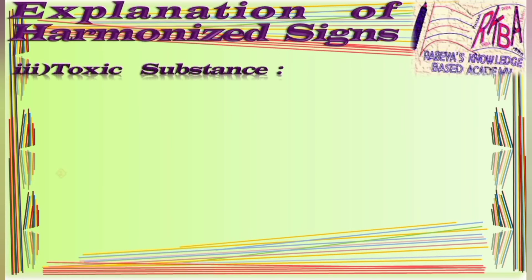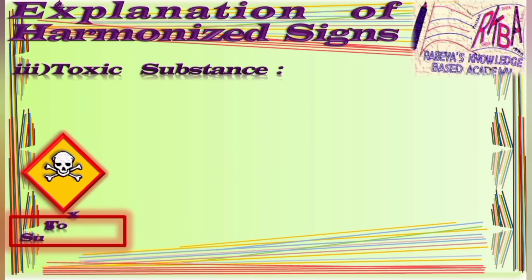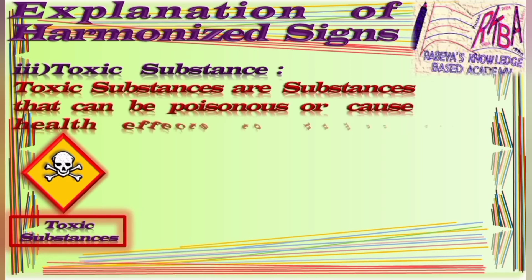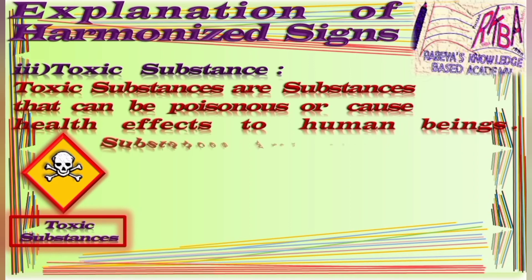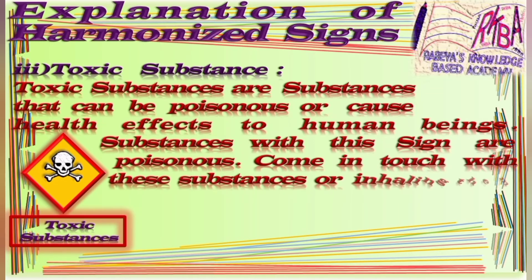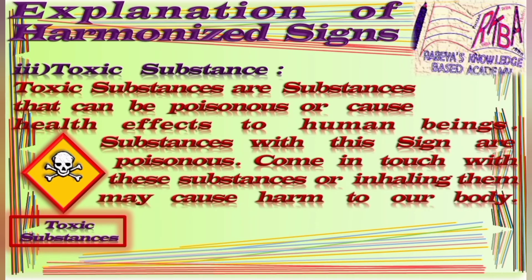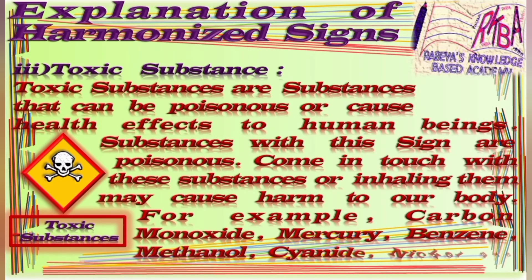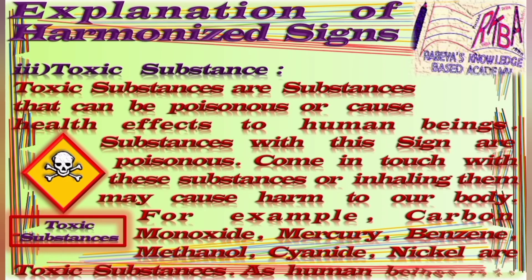The third one is toxic substances. In this slide, a sign of toxic substances has been added, which is a figure of a human being skeleton — specifically the skull. Toxic substances are substances that can be poisonous or cause health effects to human beings. Substances with these signs are poisonous; coming in contact with them or inhaling them may cause harm to our body. For example, carbon monoxide, mercury, benzene, methanol, cyanide, and nickel are toxic substances.